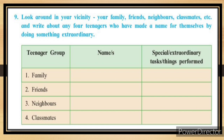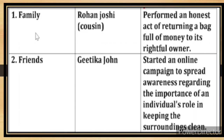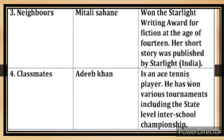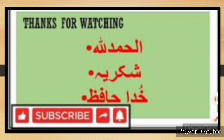Look around your vicinity — family, friends, neighbors, classmates — and write about any four teenagers who have made a name for themselves by doing something extraordinary. Examples: Family — Rohan Joshi performed an honest act of returning a bag full of money to its rightful owner. Friend — Gvitika John started an online campaign to spread awareness about the individual's role in keeping surroundings clean. Neighbor — Mitali Sahani won the Starlight Writing Award for fiction at age 14; her short story was published by Starlight India. Classmate — Adeep Khan is an ace tennis player who has won various tournaments including the state-level inter-school championship.